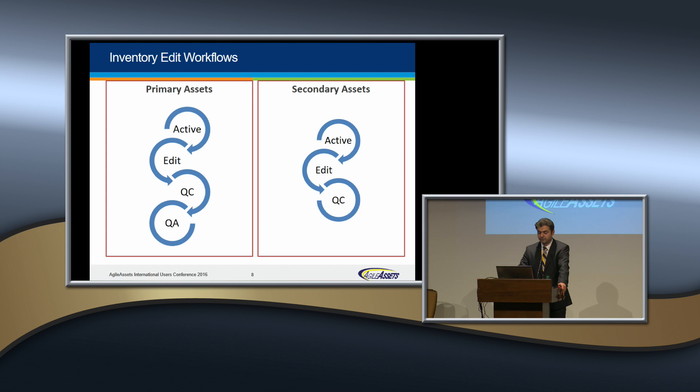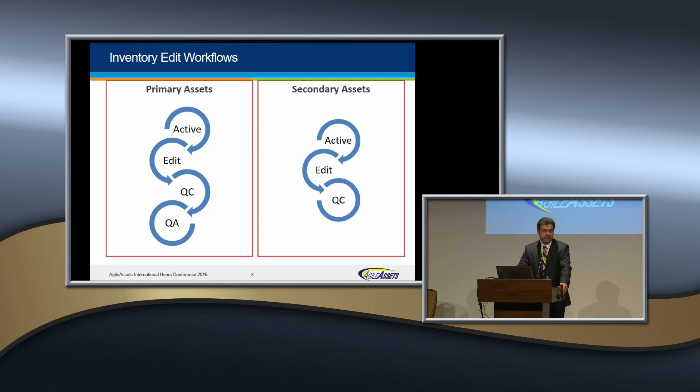Another difference between primary and secondary assets is that in primary assets, we have staged editing functionality, which means that when you start editing one active record, other people cannot see the modified data unless the QC and QA process are complete. In secondary assets, we don't have that functionality.